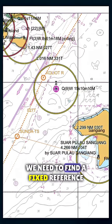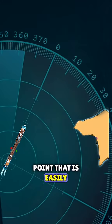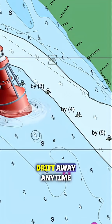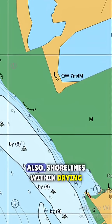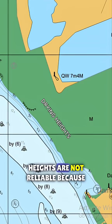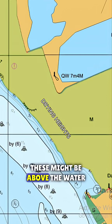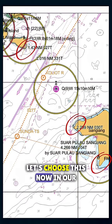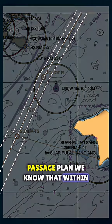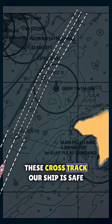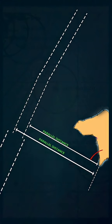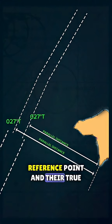First, in a chart, we need to find a fixed reference point that is easily recognizable in radar. Buoys and other floating objects are not included because they can drift away any time. Also, shorelines within drying heights are not reliable because these might be above the water by the time you are in the area. Let's choose this. Now, in our passage plan, we know that within these cross-track lines our ship is safe. So let's measure the distance from both these lines from our reference point and their true course.